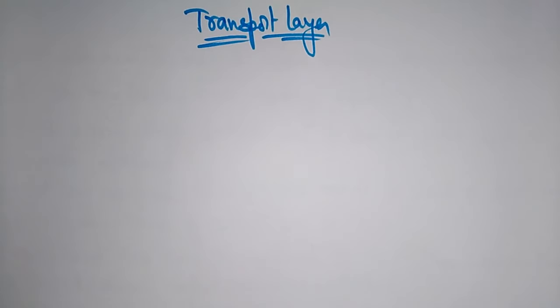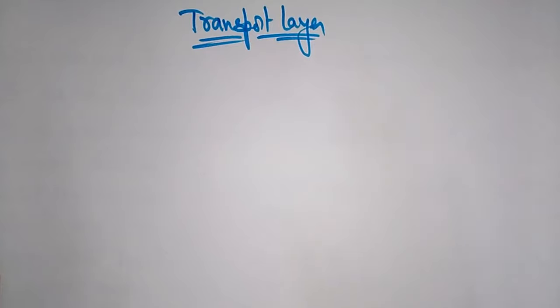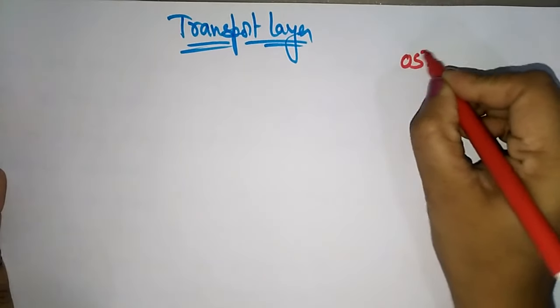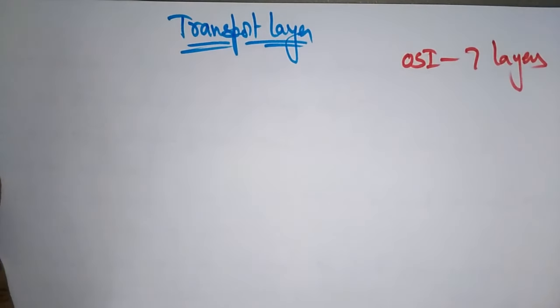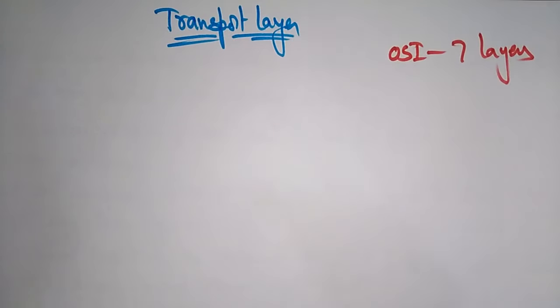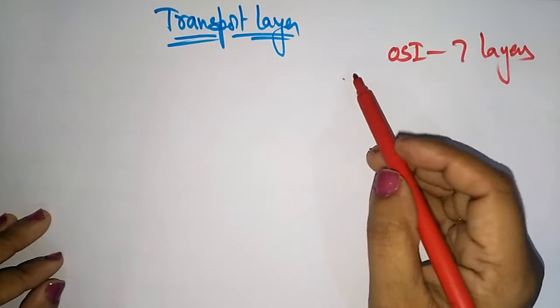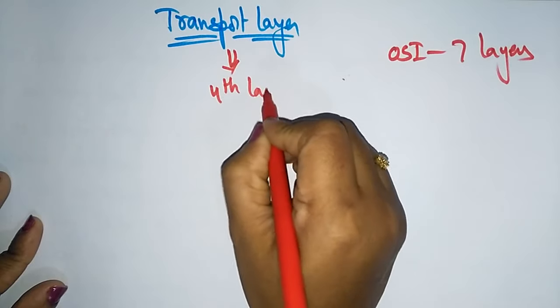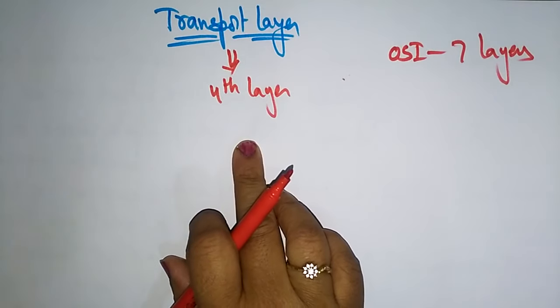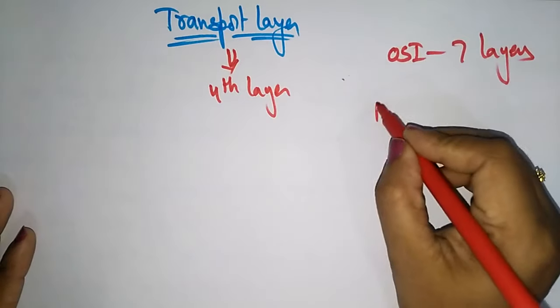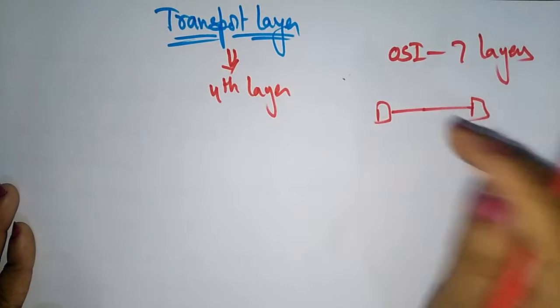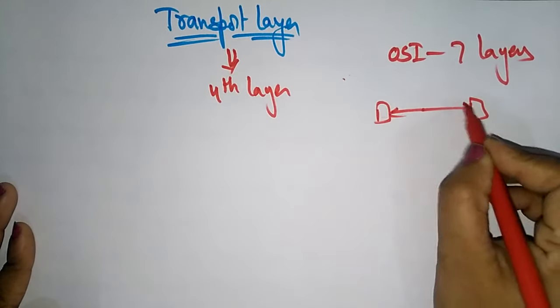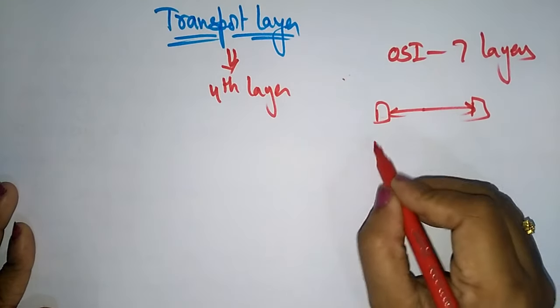Coming to the next topic, that is the transport layer. So far we have discussed about the network layer, and now let's see the transport layer. The OSI model consists of seven protocol layers, and each layer performs a support to communication task. The transport layer is the fourth layer in the OSI reference model, and it provides communication services between computers connected in a network.